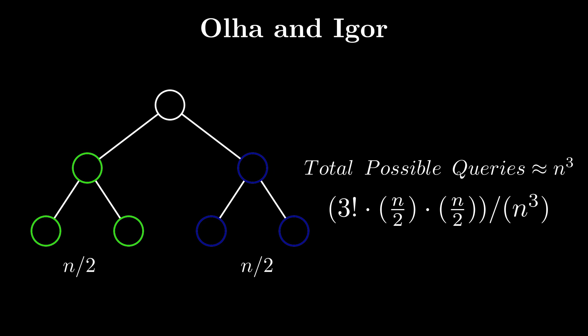Hence, the probability of selecting the root as an answer is 3n squared by 2n cubed. That's equal to 3 by 2n.